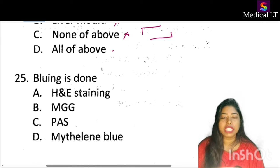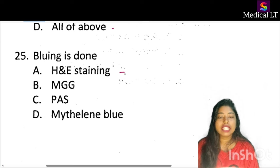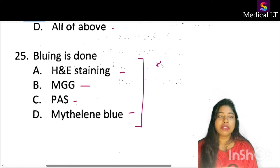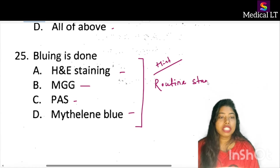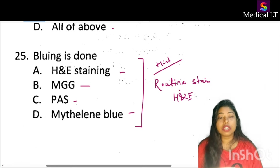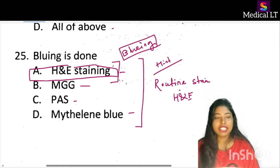The next question: gluing is done in which staining? Options include H&E staining, MGG (Grunwald Giemsa), PAS staining, or methylene blue staining. Bluing or gluing is done in H&E — hematoxylin and eosin staining — which is the routine stain in your histopathology lab. The correct answer is option A, H&E stain.